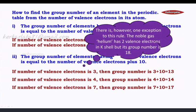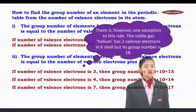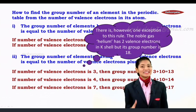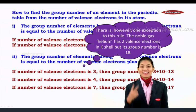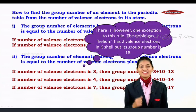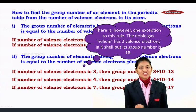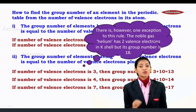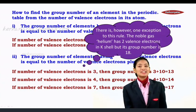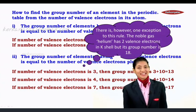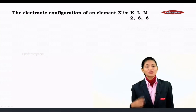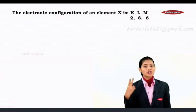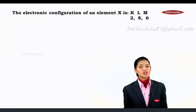There is however one exception to this rule: the noble gas helium. It has two valence electrons in the K shell, but its group number is still 18.